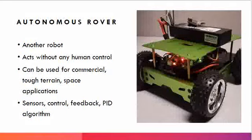In the last video we talked about the line follower robot. In this video we will talk about the autonomous rover, also called an autonomous robot. The autonomous robot has a few differences from the line follower robot.